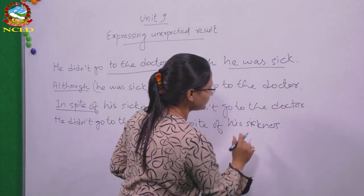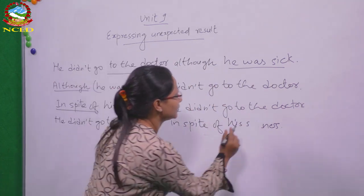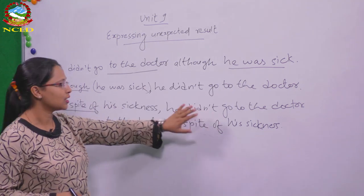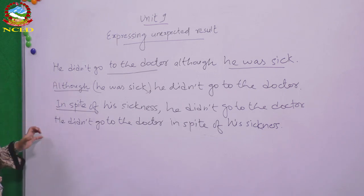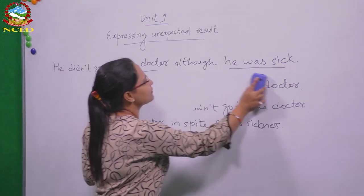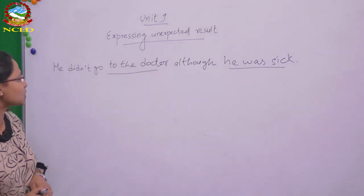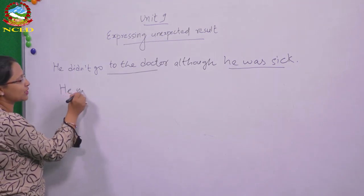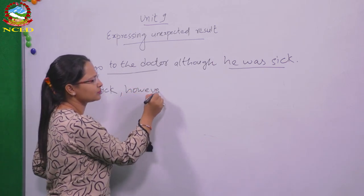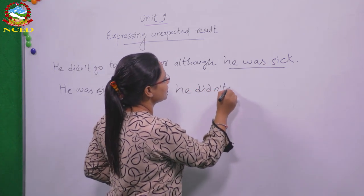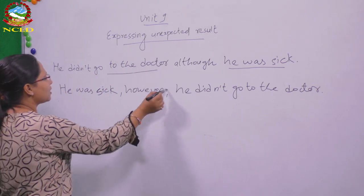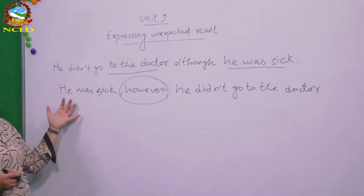These are the things you can use to express unexpected results. Besides these, there is one more type of structure. Another word — 'however' — can be used instead of 'although,' 'even though,' 'in spite of,' or 'despite.' But here there is a little change in the structure. 'He was sick' is the situation, and 'he didn't go to the doctor' is the unexpected result.